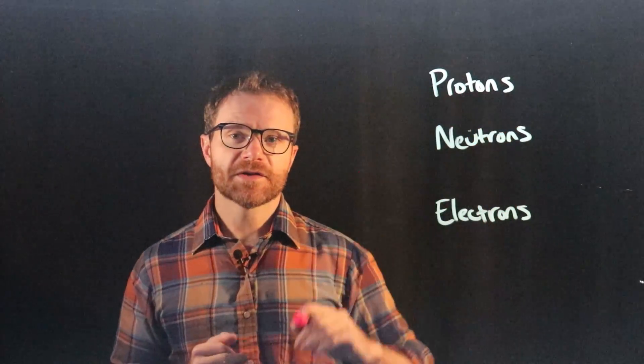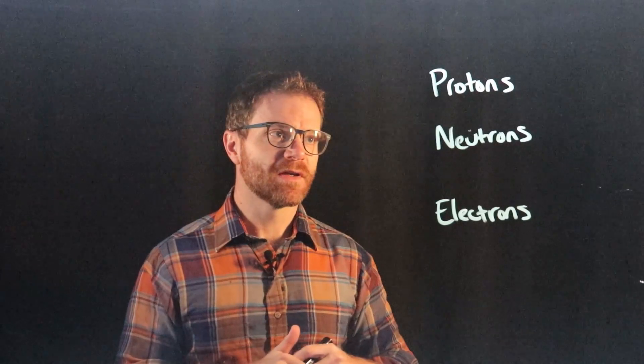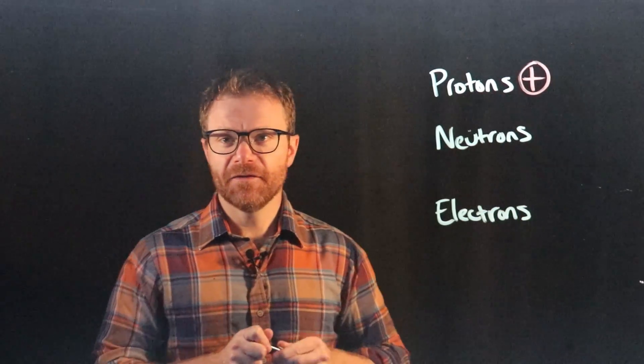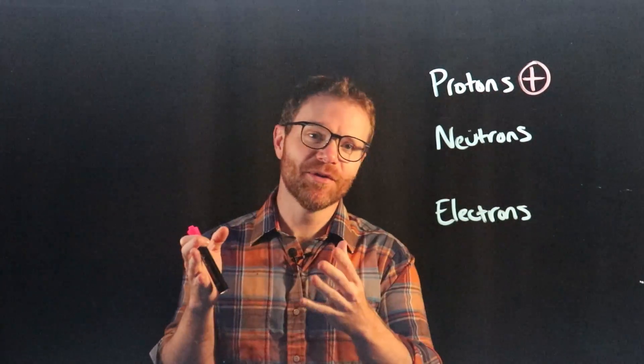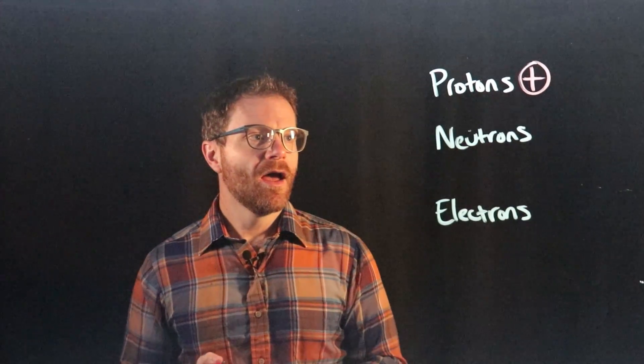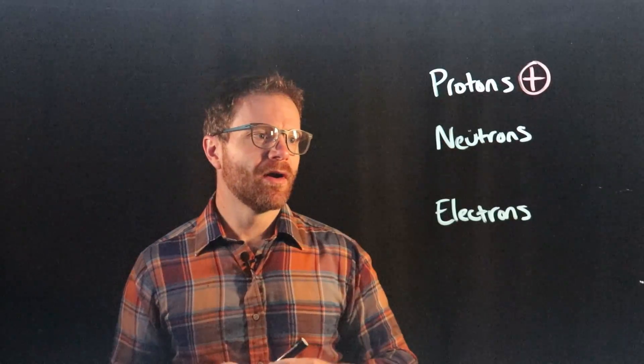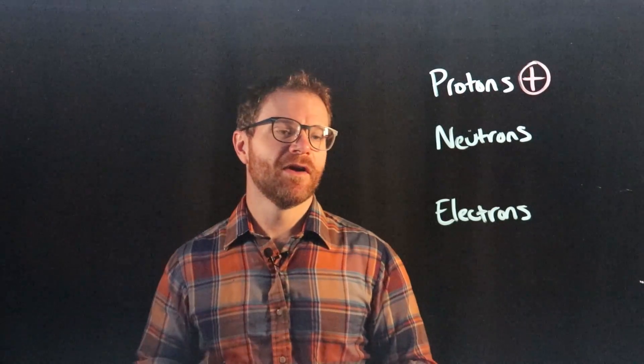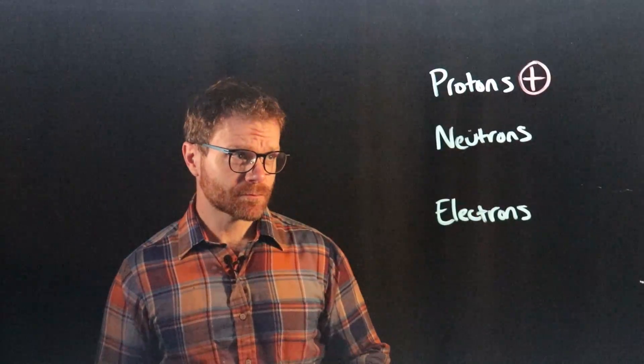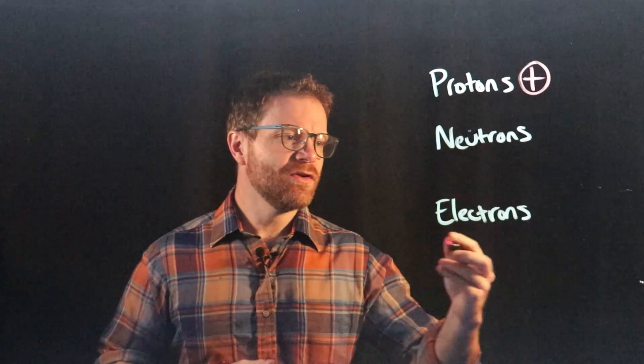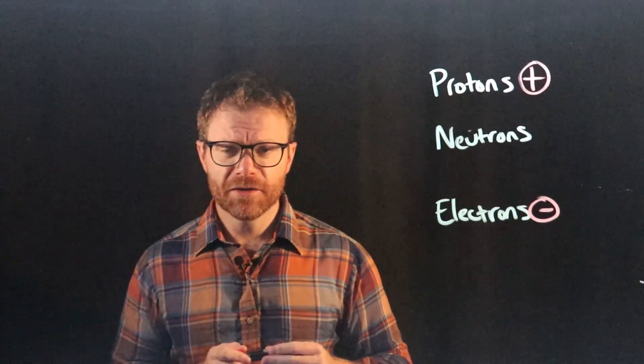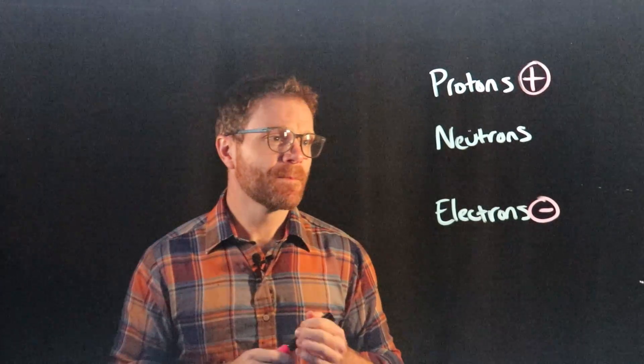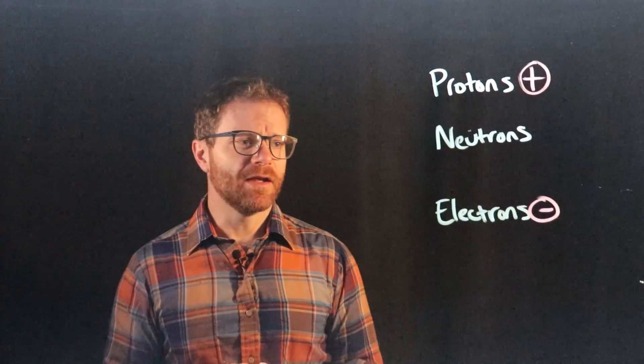Of these three, protons are actually the easiest to remember because protons have a positive charge, in the sense that if I was pro-tacos, that means I have a positive opinion of tacos. Neutrons are also kind of easy to remember. They have no charge at all because they're neutral. They're neither positive nor negative. Neutron, neutral. And by process of elimination, electrons have a negative charge. These charges are like magnetic charges. Like charges repel and opposite charges attract, and neutral charges don't really have any effect at all.